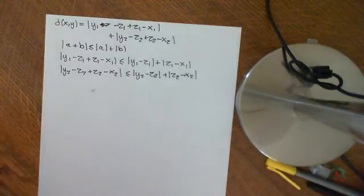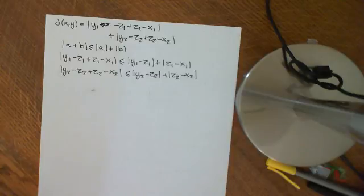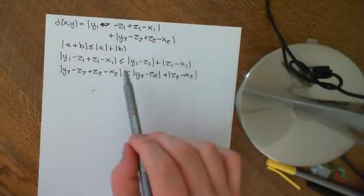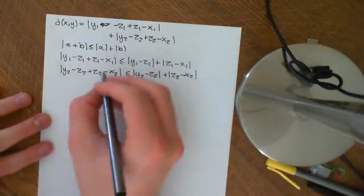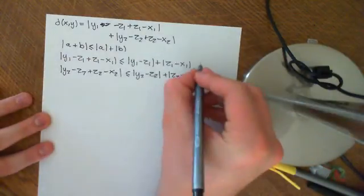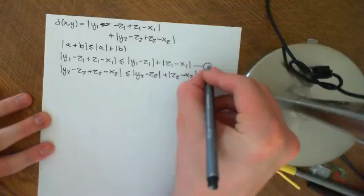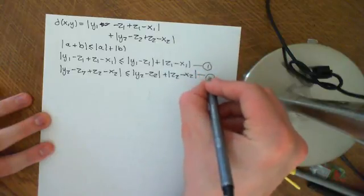Okay, so we were in the process of finding a different metric space on R2. We had just got to this point. Now what we will do is add, so let's call this equation 1, and let's call this equation 2, or inequality 2.